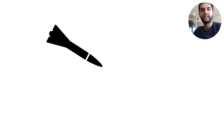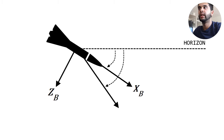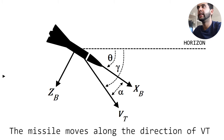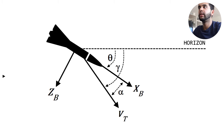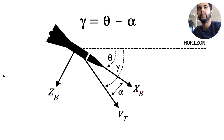Let me introduce missile defense notation and terminology. We have the body frame with xb pointing forward and zb pointing down in 2D. There are two key angles: the pitch angle from the horizon, gamma the flight path angle, and alpha the angle of attack relative to the body frame and velocity. The flight path angle equals the pitch angle minus the angle of attack — this is a fundamental rule in any aerospace control system.